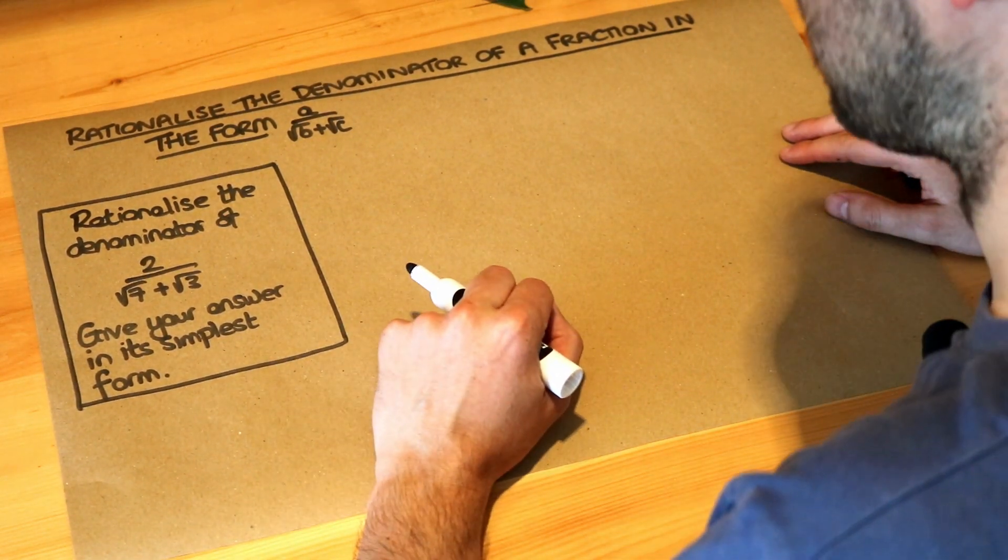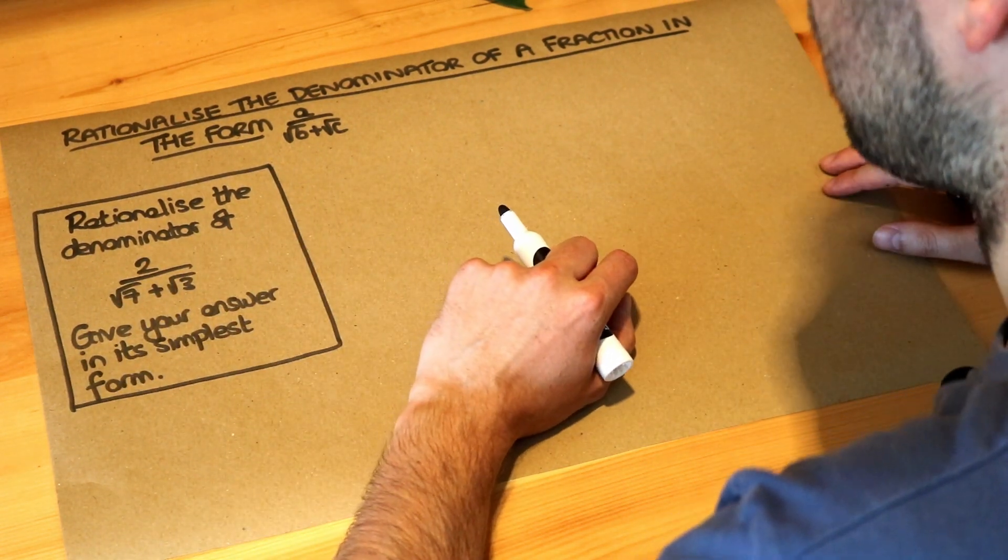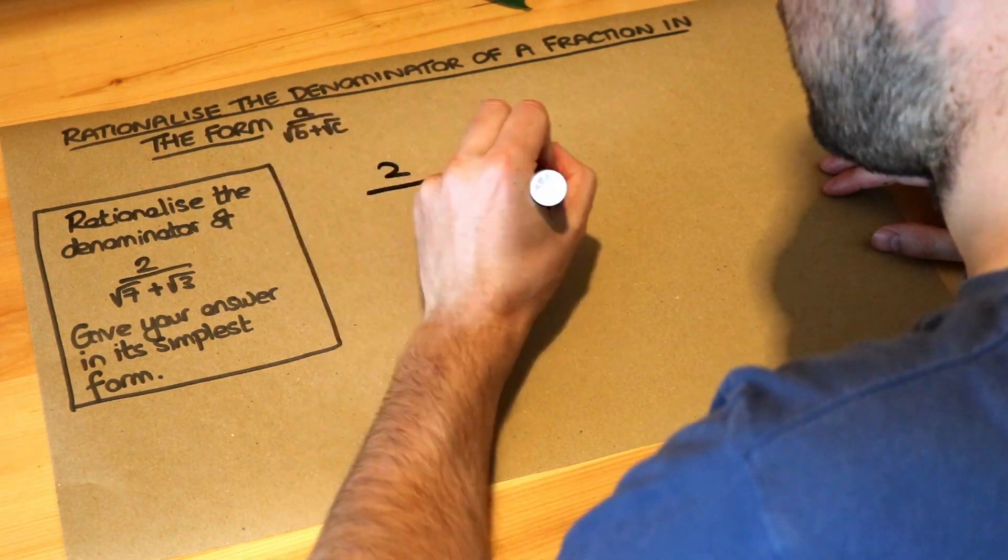Remember, to rationalize the denominator is to get rid of any roots, any square roots you have in the denominator. Now do you remember the approach we use for this?